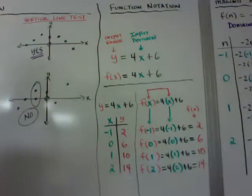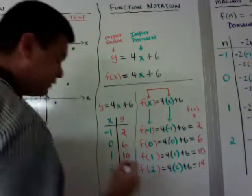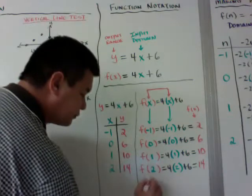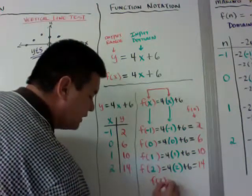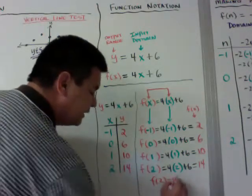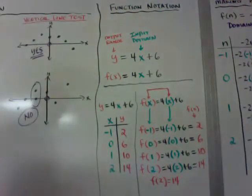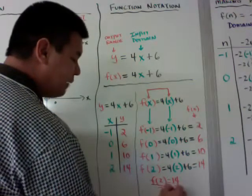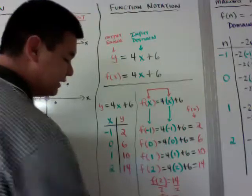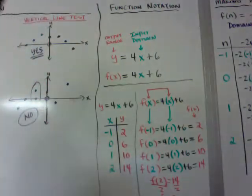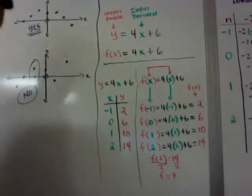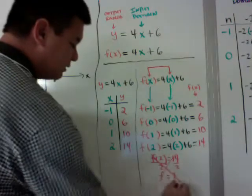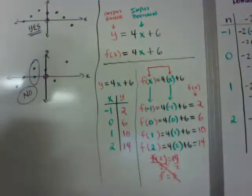A common mistake: if f(2) = 14, do not treat this as f times 2. Do not divide by 2 and say f = 7. That is wrong. You leave it as f(2) = 14.